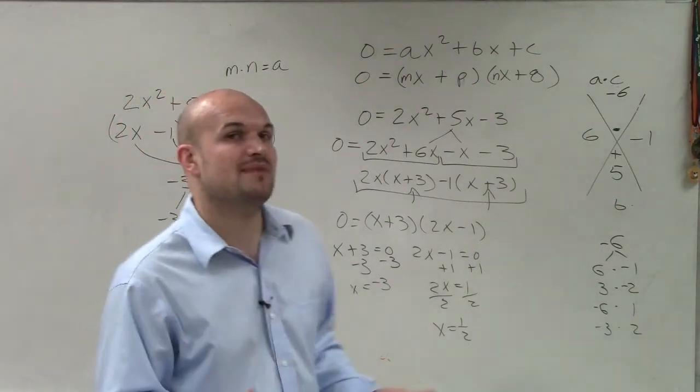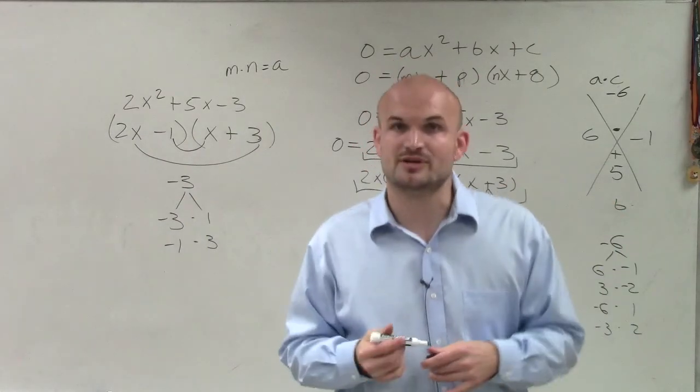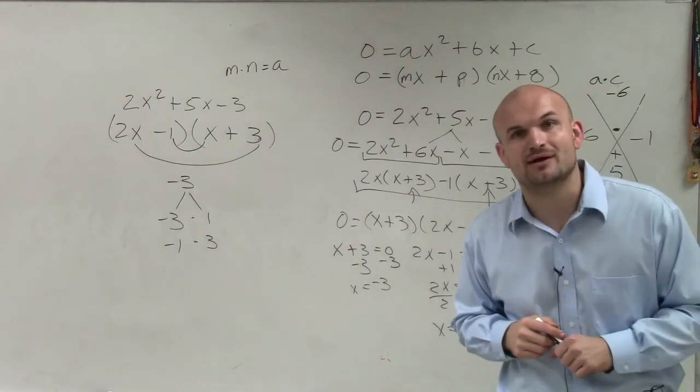So those are two ways. I'm going to go through a couple other methods through there, but I just want to kind of give you an idea of at least the process that we're going to be looking for when you want to solve by factoring when you have a is not equal to 1. Thanks.